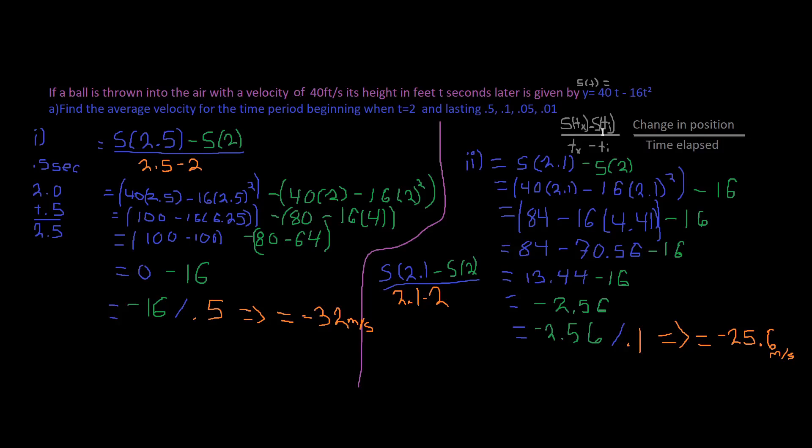i will be our initial, which is 2, because that's what it says - find the average velocity for the time period beginning when t equals 2. So that's going to be our initial time, and the following will be the time in x. It says change in position divided by time elapsed.